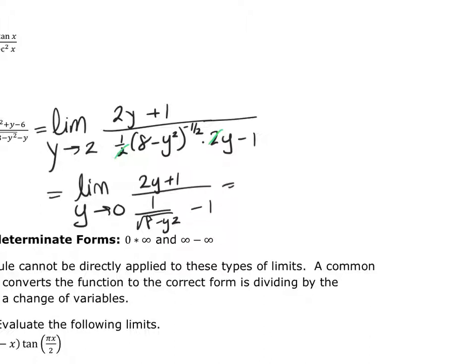Actually, I don't even have to do that because — and that should be going to 2 — I can do direct substitution now with no problems. If I put 2 in the numerator, I don't get 0. And when I put 2 in the denominator, I don't get 0. So I only have to do the derivative once, and then I'm good to go.